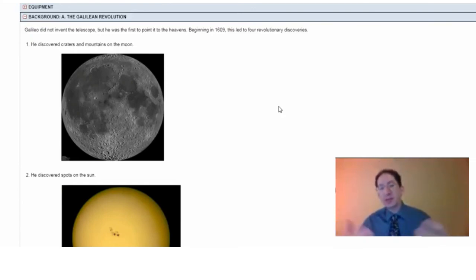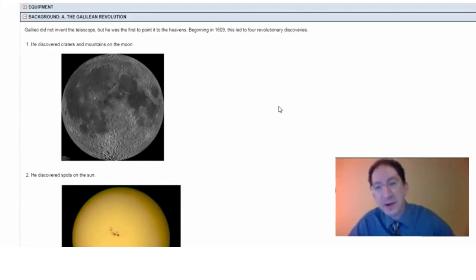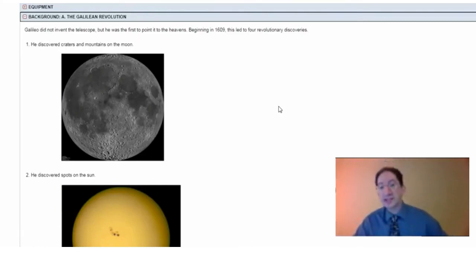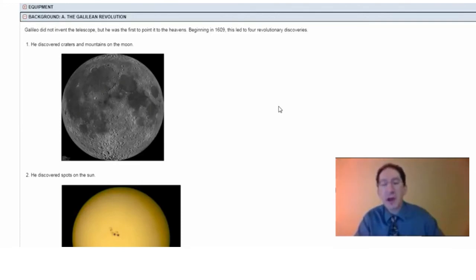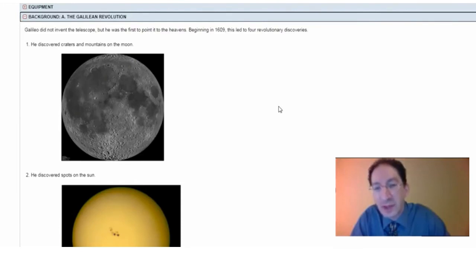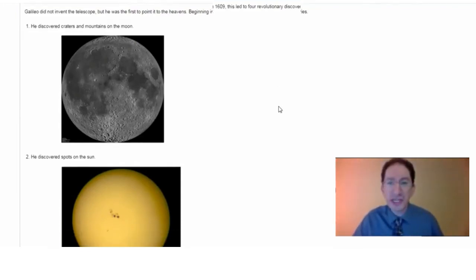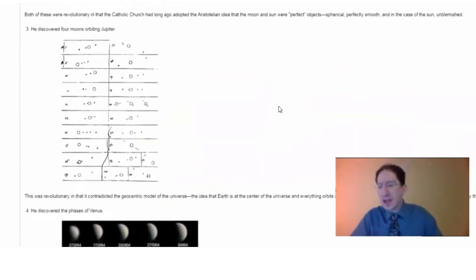When Galileo pointed his telescope at the moon — and you can do this yourself with simple binoculars — the moon is not perfectly smooth. It has craters and mountains and ridges, very easy to see. In the case of the sun, he saw spots. He kept very careful records, and what he drew matches up with what we now know to be sunspots. The sun is indeed blemished and the moon is not perfectly smooth. These two discoveries contradicted church teachings of the day, but not directly the geocentric model.